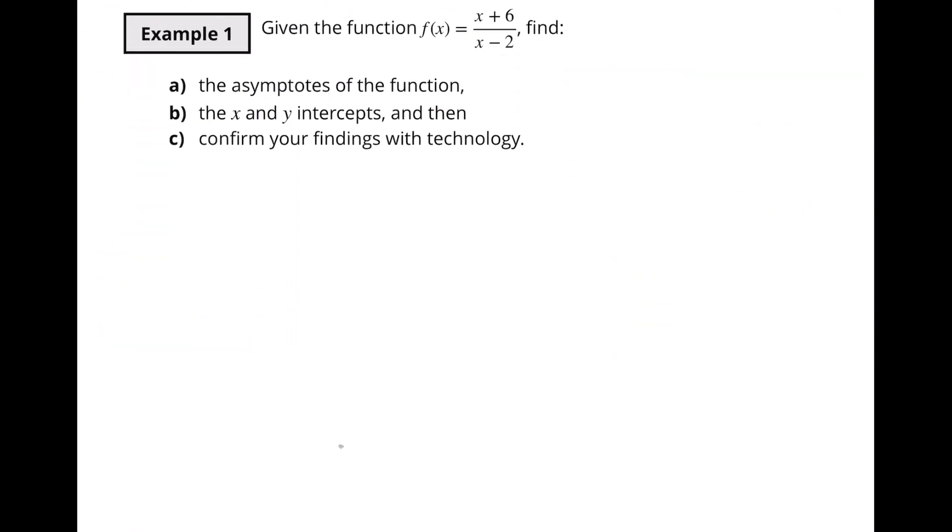So what happens if we've got something like this? x plus 6 over x minus 2, and we need to find the asymptotes and the x-intercepts of that? How are we going to find the asymptotes? How do we find the intercepts? We haven't talked about any of this stuff. Well, we will in the next video. After you give me a thumbs up, I'll see you there. Let's see what happens if we can find the asymptotes.